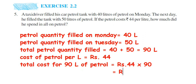So the answer is rupees 3960. This was a simple question — you have to add and then multiply. If you have any further questions or doubts on this question or any other question from this chapter, you can leave a comment. Thank you so much for watching.